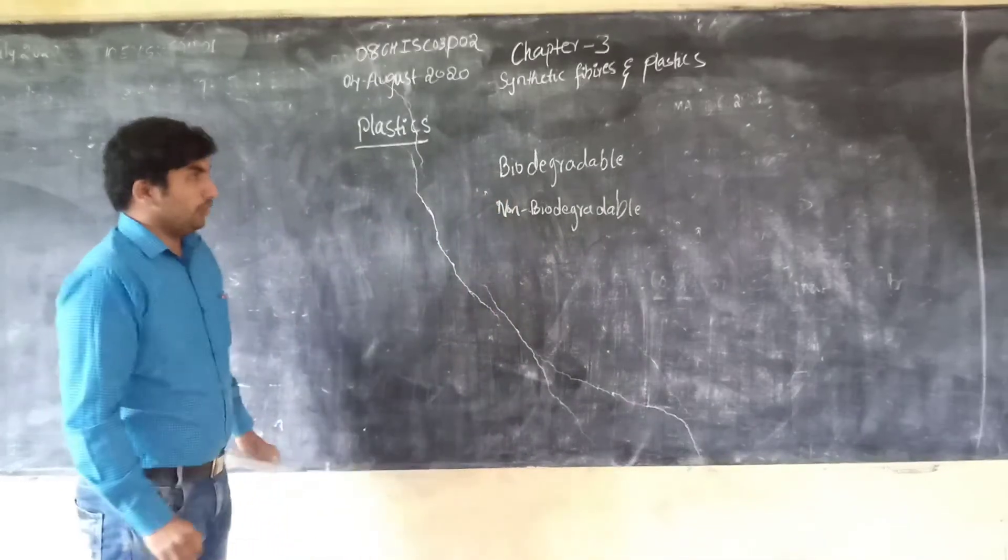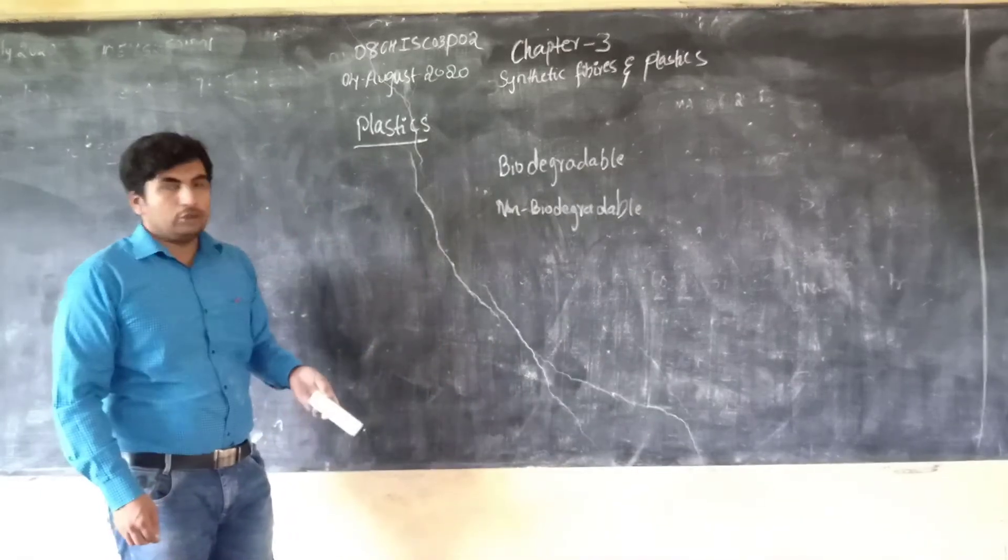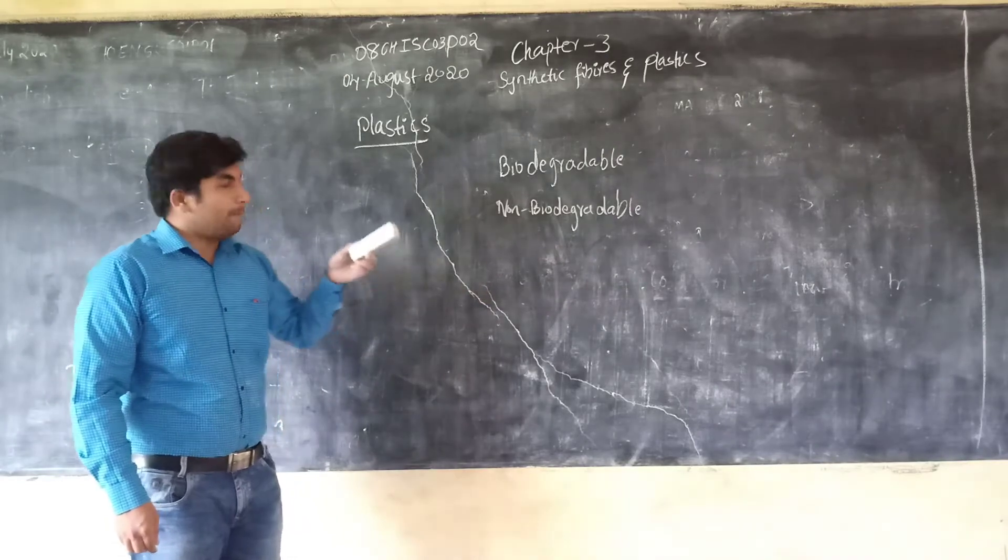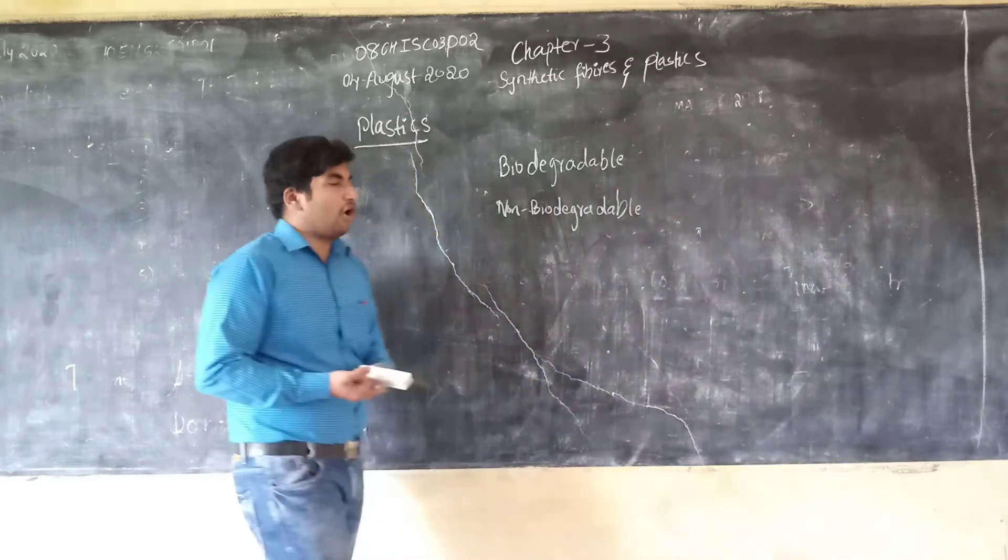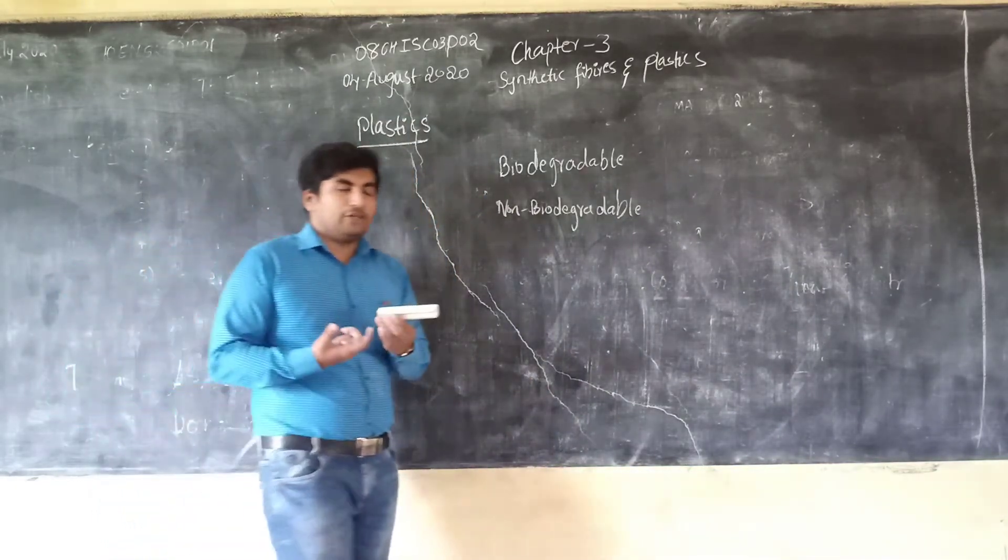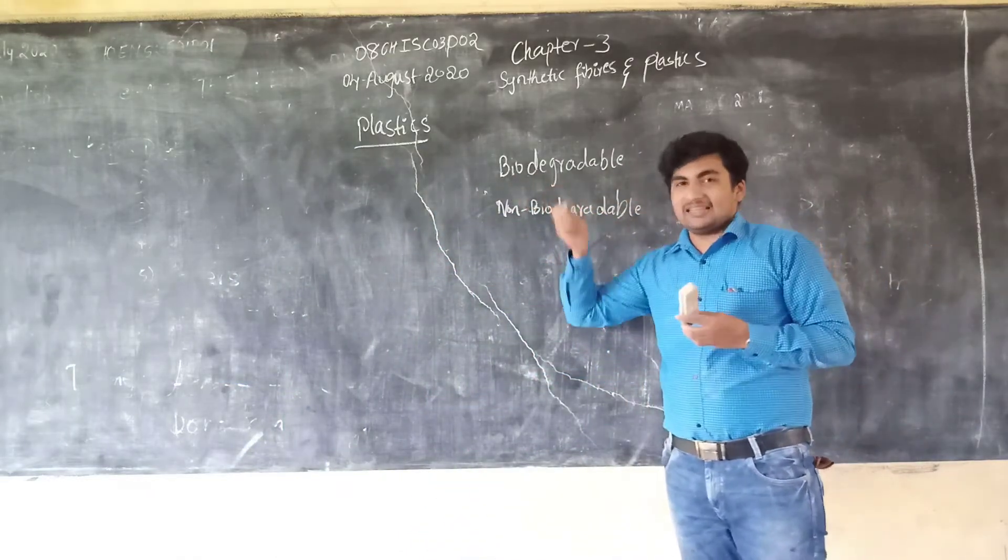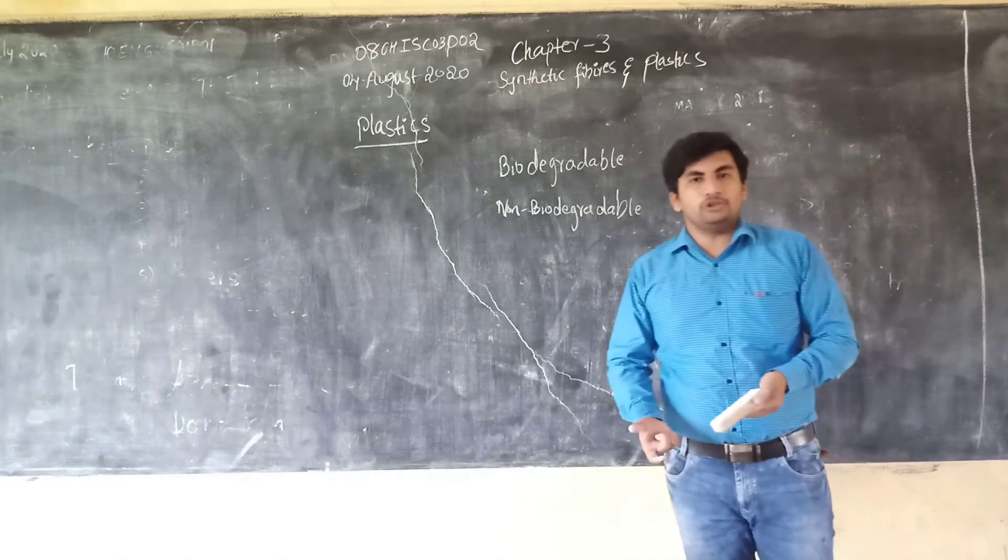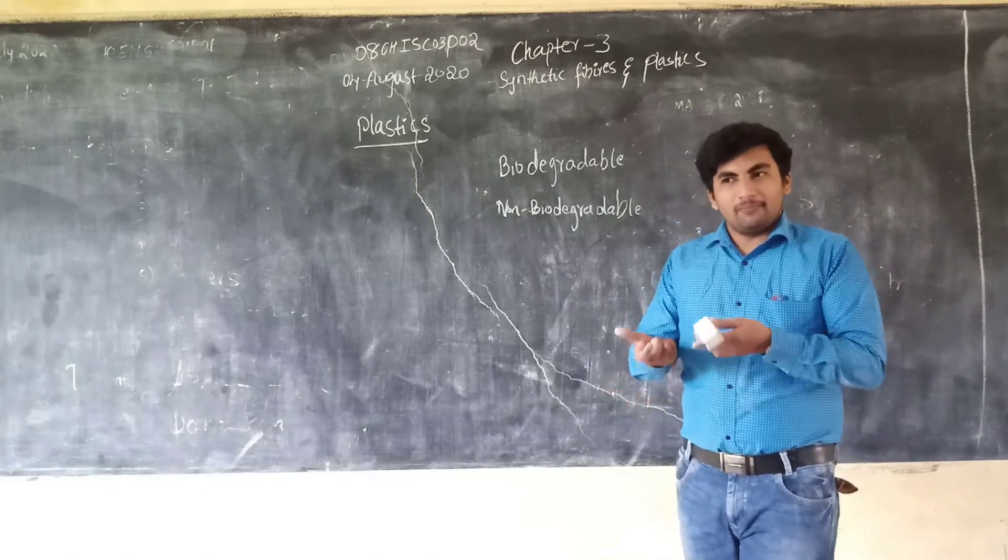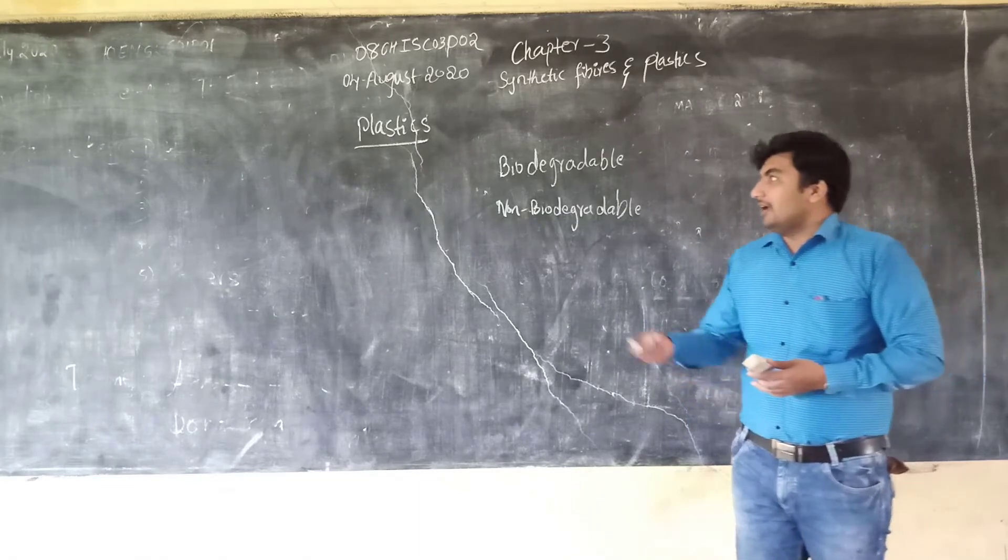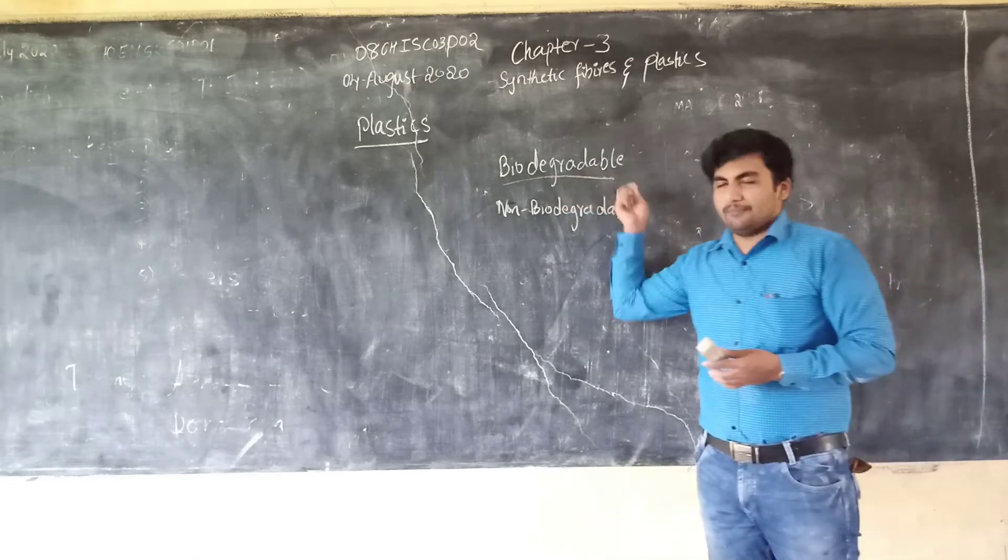What is biodegradable? Biodegradable materials are the materials which will decompose after some time in nature through natural processes. That means, through bacteria, it will decompose. That type of material is called biodegradable material.